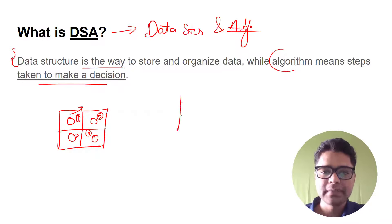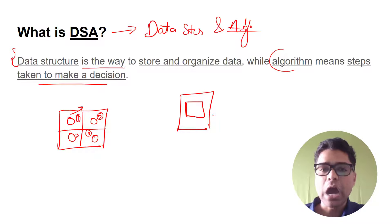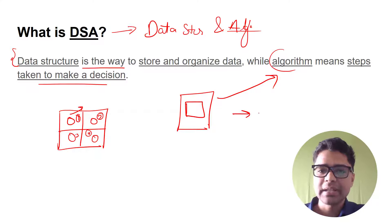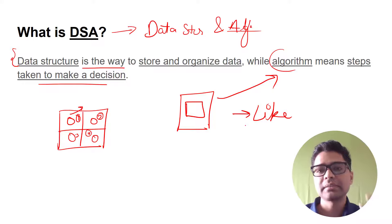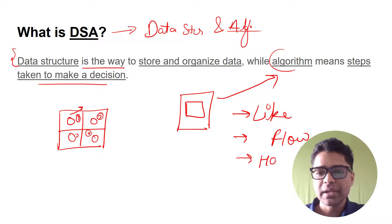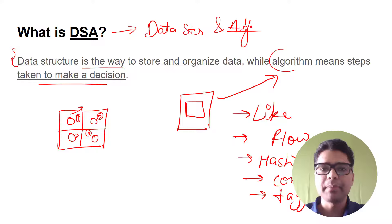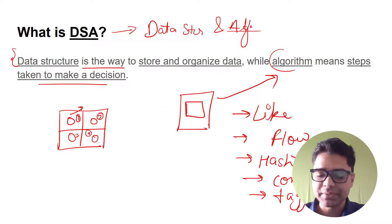Another example of an algorithm is your Instagram feed. Why do you see a particular photo or Instagram reel on your page? That's because there are algorithms deciding that. For example: if you have liked previous reels, if you follow a hashtag, if you have commented, or if someone has tagged you — these are assumptions, but let's say if these events happen, the algorithm is going to show you an Instagram reel. That is what algorithm means: steps taken to make a decision.